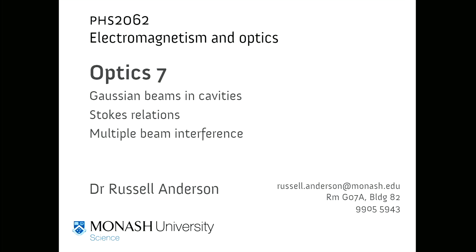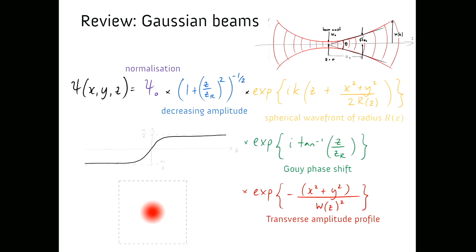We've got a couple of things to finish off with Gaussian beams before continuing on to the next topic in the optics subunit. To dust the cobwebs off after mid-semester break, we'll look at what we got up to in week nine. We derived the full Gaussian beam amplitude function — it contains its amplitude and its phase, because it's a complex function. The total beam power is described by psi-nought.